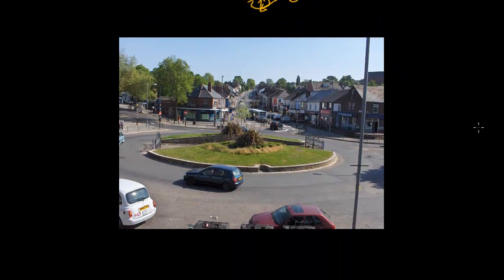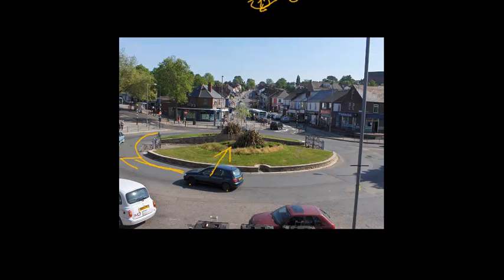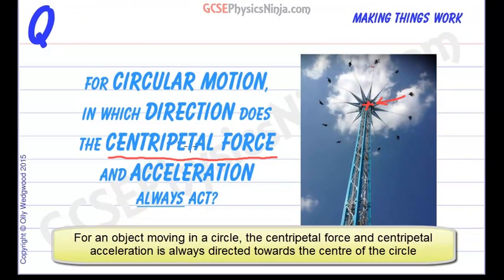In another example, a car going round a roundabout. What keeps the car in a circle? Because it has a speed in a straight line forwards at one instant, but it's going to actually move in a circle. Well, it can only be friction between the tyres and the ground, which is acting towards the centre of the circle. That force of friction is the centripetal force and that creates the centripetal acceleration that keeps the car going in a circle. So, for objects going in circles, the centripetal force and centripetal acceleration is always directed towards the centre of the rotation.